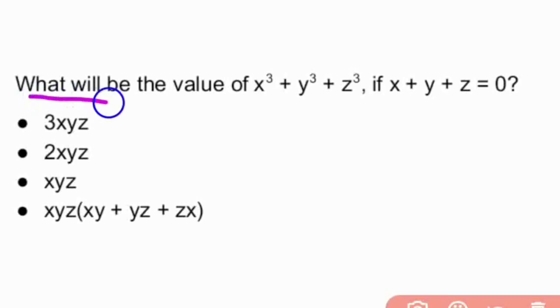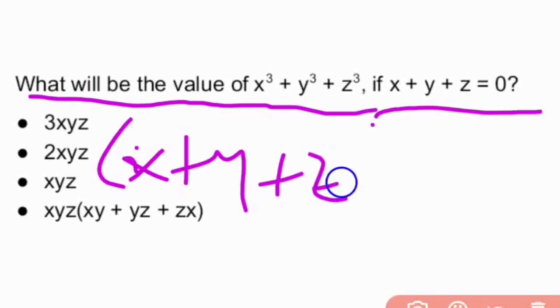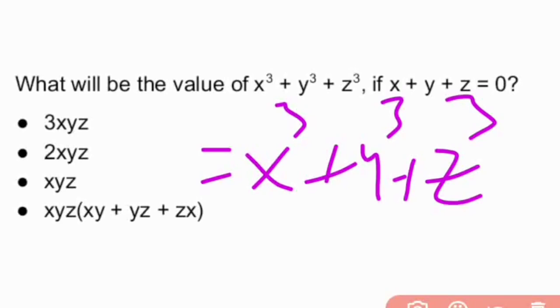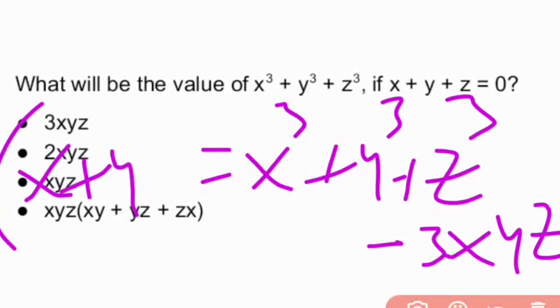First question: what will be the value of x³ + y³ + z³, if x + y + z equals to 0? Using the formula for (x + y + z) whole cube, we have: (x + y + z)³ = x³ + y³ + z³ + 3xyz. Simplifying it, x + y whole cube plus z cube = x³ + y³ + z³ - 3xyz.